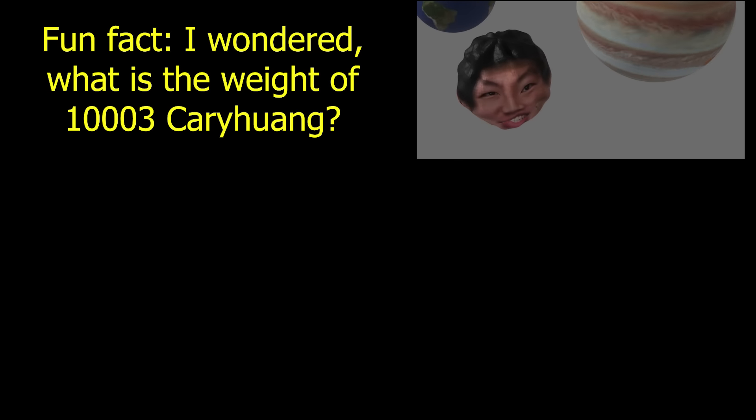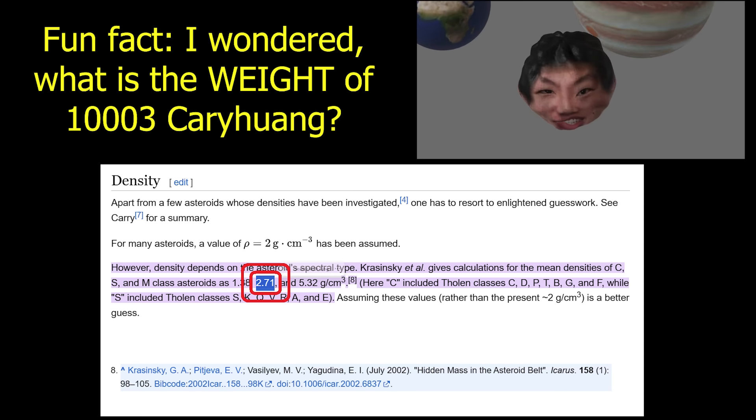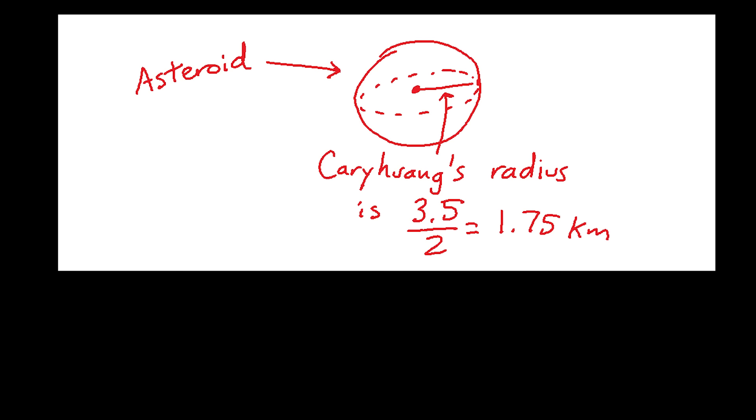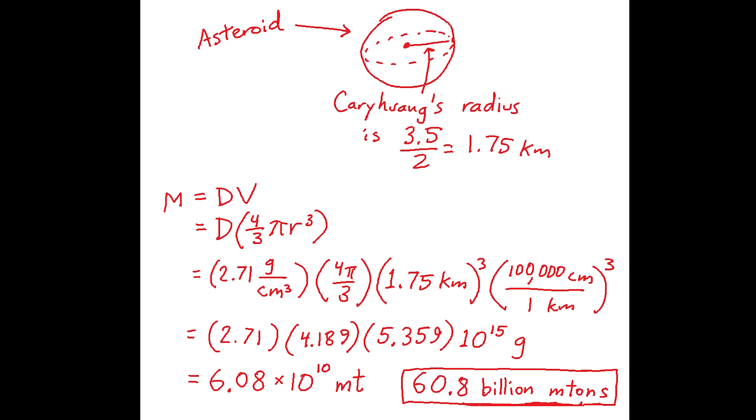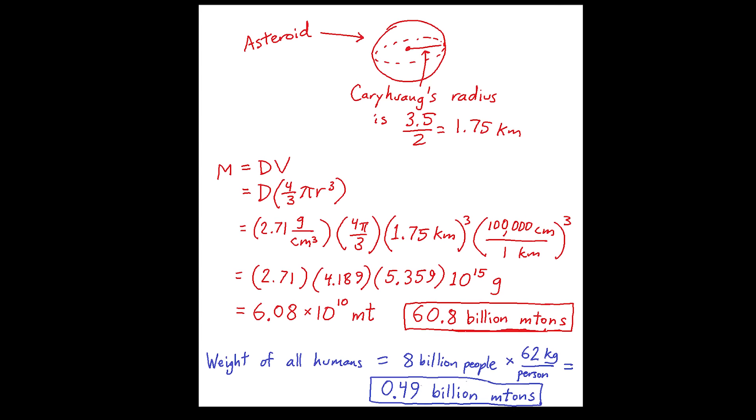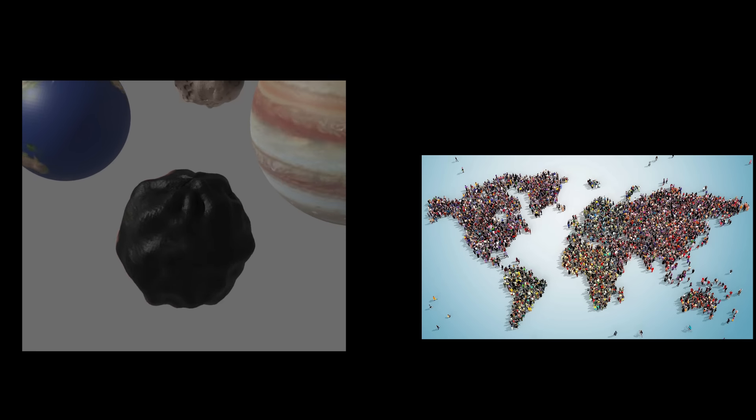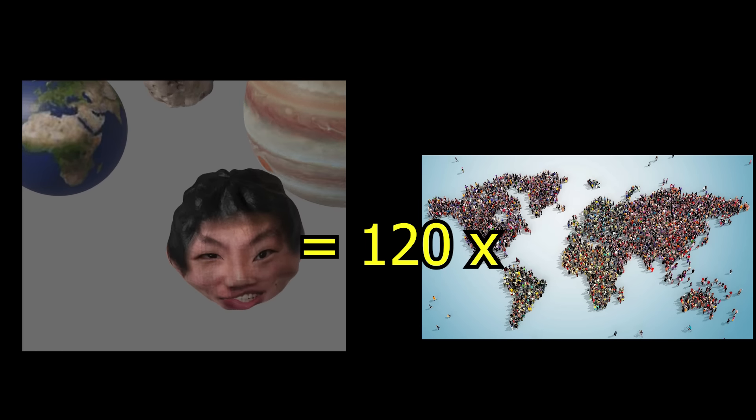Fun fact, I wondered, what is the weight of Kari Huang? Well, assuming a density of 2.71 grams per cubic centimeter and assuming Kari Huang is roughly spherical, Kari Huang weighs roughly 60 billion metric tons. That's crazy because the weight of all living humans right now is about half a billion metric tons. So, Kari Huang outweighs all Homo sapiens by a factor of 120 to 1. Humans, you're losing.